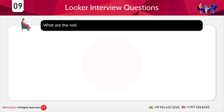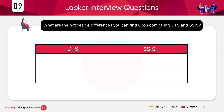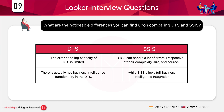The next question is: what are the noticeable differences between DTS and SSIS? DTS stands for Data Transformation Services while SSIS stands for SQL Server Integration Services. SSIS can handle a lot of errors irrespective of their complexity, size, and source, whereas the error handling capacity of DTS is very limited. There is very little business intelligence functionality in DTS while SSIS allows full BI integration. SSIS also comes with an excellent development wizard, which is absent in DTS, and when it comes to data transformation, DTS cannot compete with SSIS.